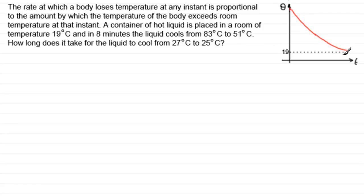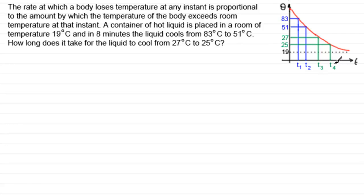So how do we go about problems like this? First of all, let's put some information on that we're given. We're told that as the temperature cools from 83 degrees C to 51 degrees C — this is a sketch, not accurately drawn to scale — at these two temperatures I'm going to associate times T1 and T2. Similarly, when the temperature goes from 27 degrees C to 25 degrees C, the time goes from T3 to T4. So the answer to the question — how long does it take to cool from 27 to 25 degrees — is T4 minus T3.